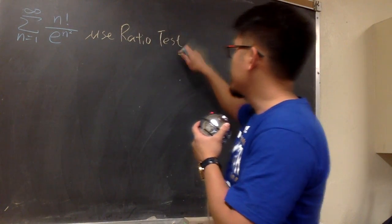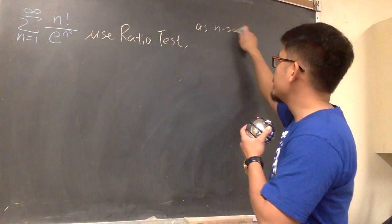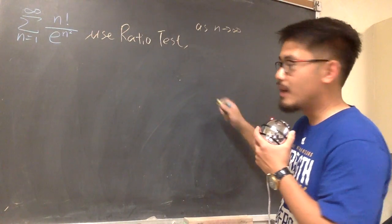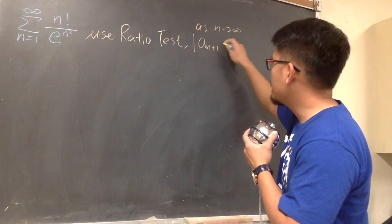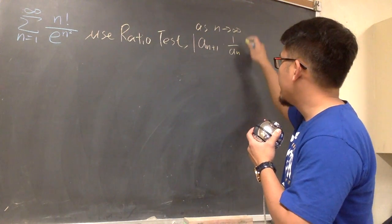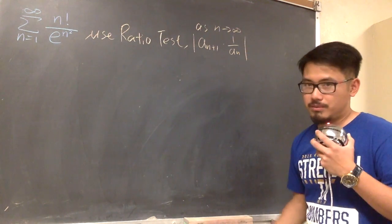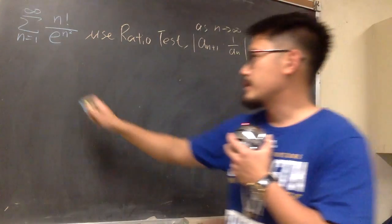And then for the ratio test, we check the limit as n goes to infinity, and we work this out. We have to work out the absolute value of a_{n+1} times 1 over a_n to see what this turns out to be. So, let's get to work.